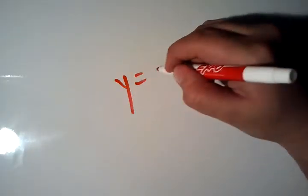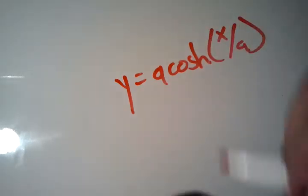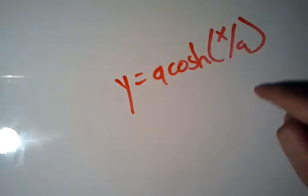And now, the equation of a catenary is given by y equals a cosh x over a. And a is just a constant, and changing a will change the shape of the catenary.